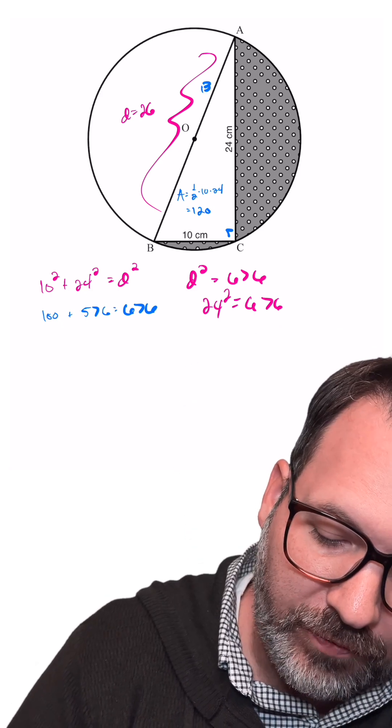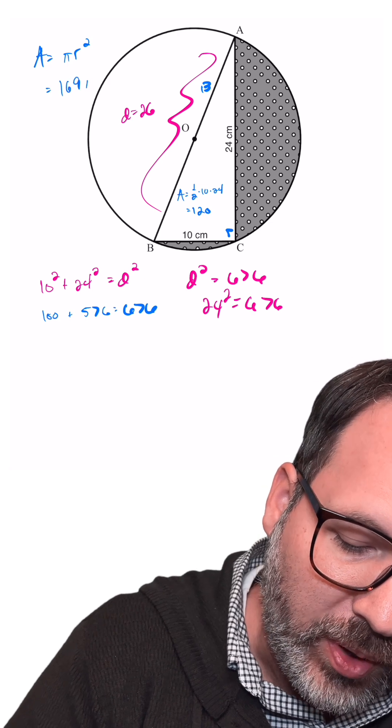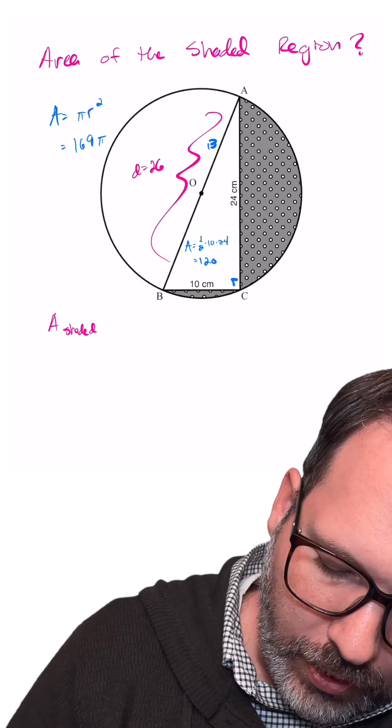The radius itself is 13, and then area of a circle, pi times the radius squared, would be 169 pi.